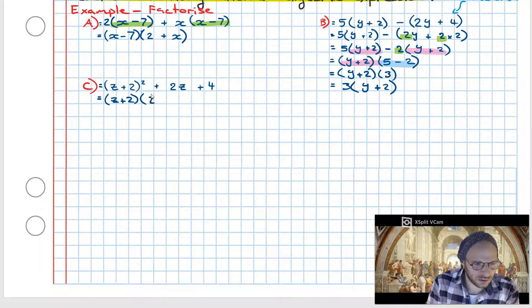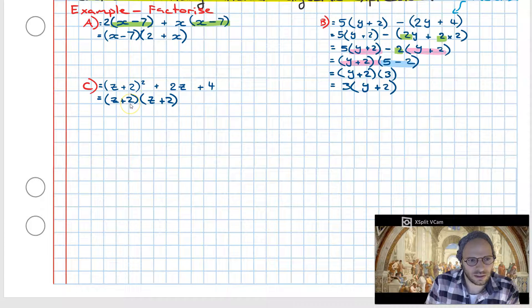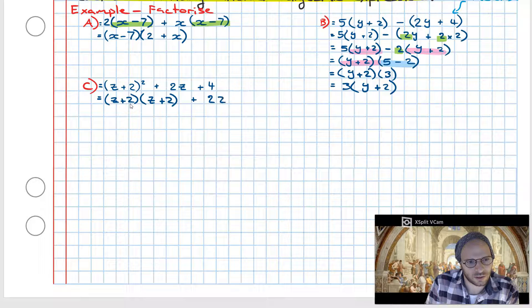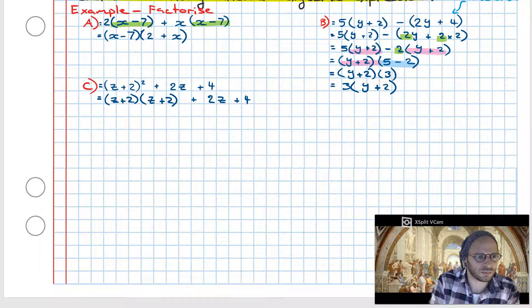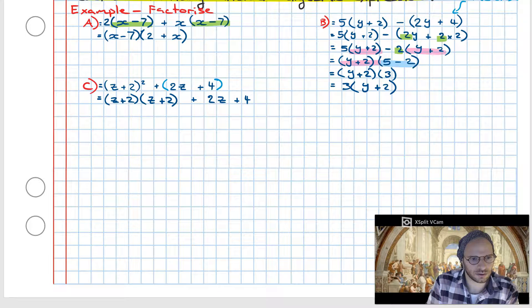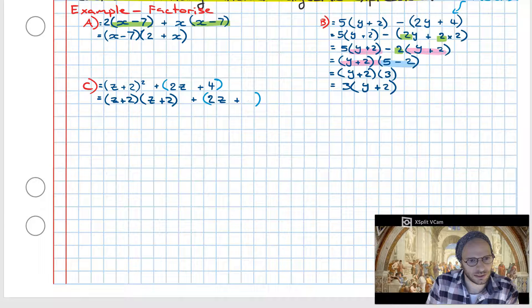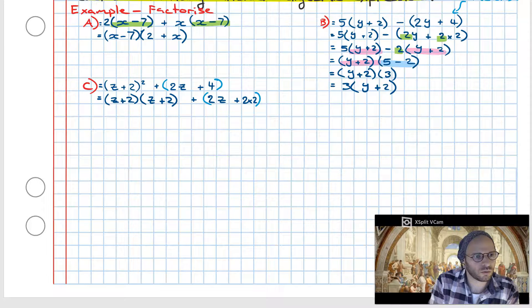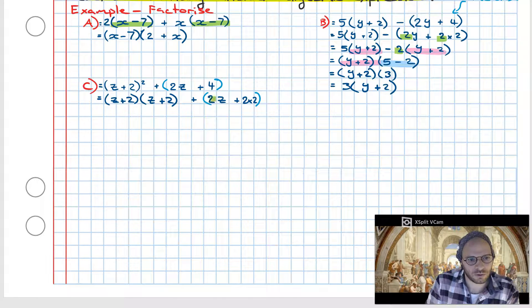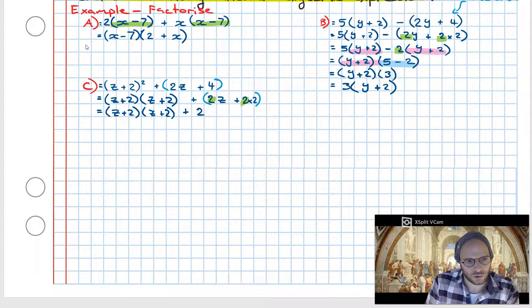The squared at the top simply means that there's two copies of z plus 2, and then over on the right here we still have 2z plus 4. Now one way we can rewrite this 2z plus 4 is we throw in some imaginary brackets and change this 4 to 2 multiplied by 2. What you're going to see is that we're able to factorize for the 2 and the 2 here. Having done that we're going to pull the 2 out the front and then we're left with a z plus 2 over here.